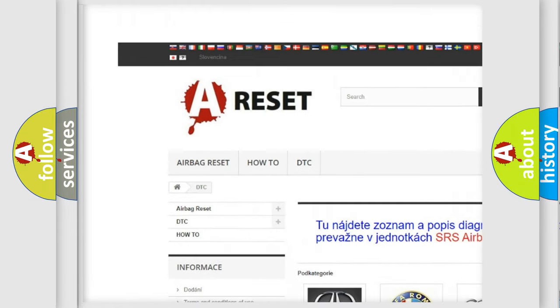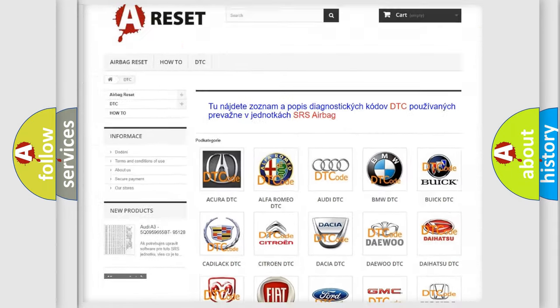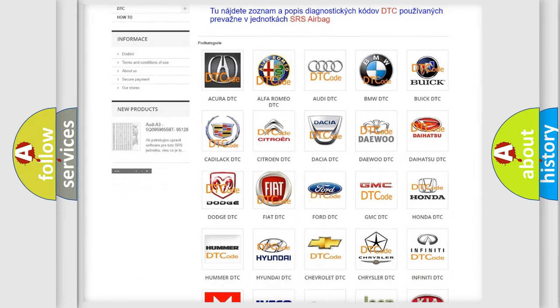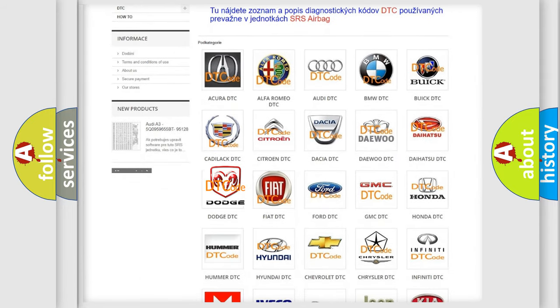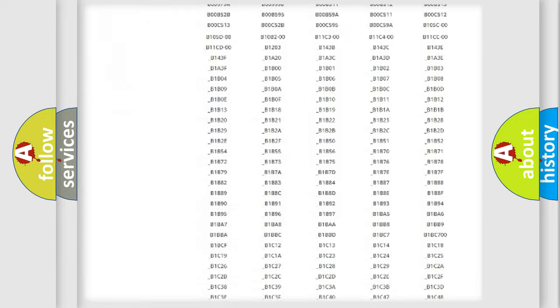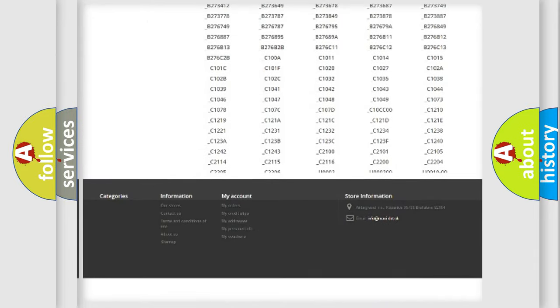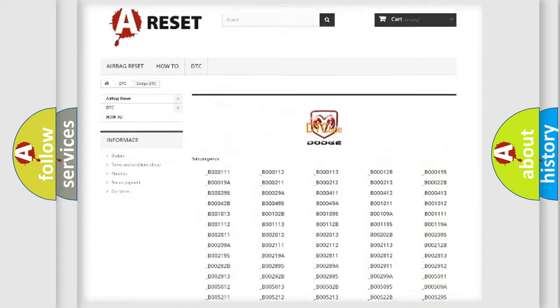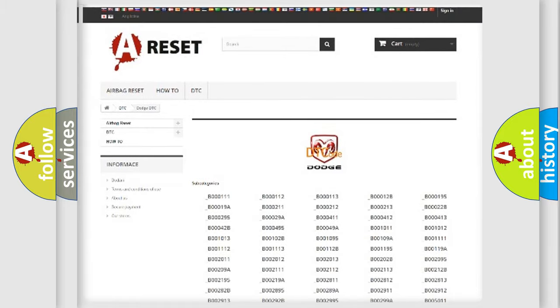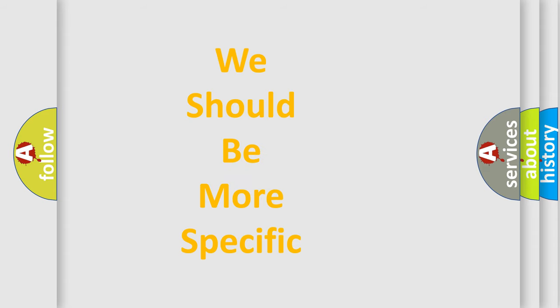Our website airbagreset.sk produces useful videos for you. You don't have to go through the OBD2 protocol anymore to know how to troubleshoot any car breakdown. You will find all diagnostic codes for Dodge vehicles and many other useful things.